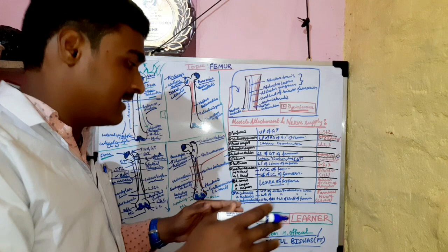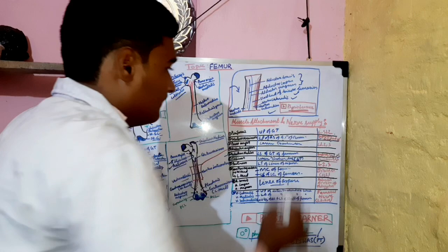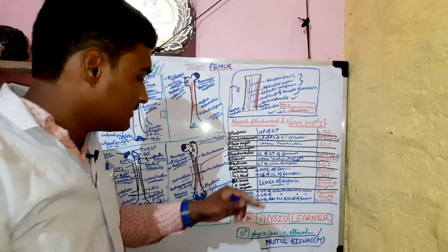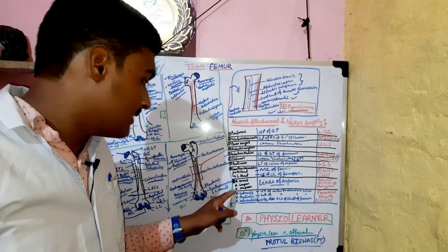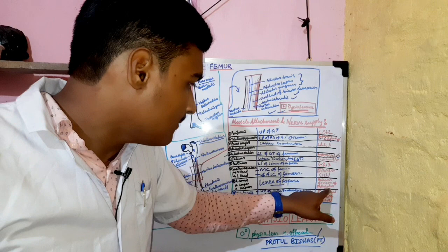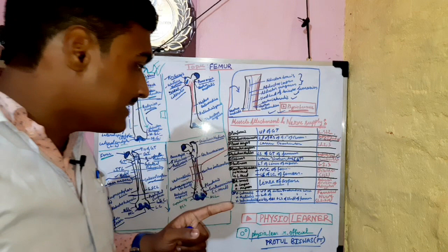If you like this, please subscribe to the Visual Learner YouTube channel. The nerve supply of vastus lateralis, vastus medialis, and vastus intermedius is the femoral nerve — L2, L3, L4. The nerve supply of adductor brevis, adductor longus, and adductor magnus is the anterior division of the obturator nerve. The nerve supply of gastrocnemius medial and lateral head is the tibial nerve. Namaskha, Jai Hind.